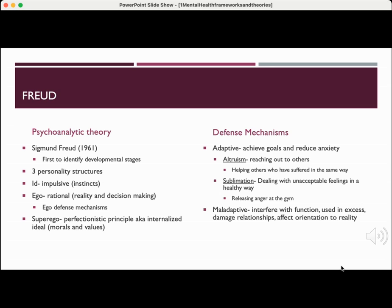Let's talk about Freud and psychoanalytic theory. Sigmund Freud was around 1961 and he identified developmental stages. He also identified three personality structures: the id, which is impulse or instinct; the ego, which is your rational side — reality and decision making; and the superego, where you can have the perfectionistic principle or internalized ideals like morals and values.